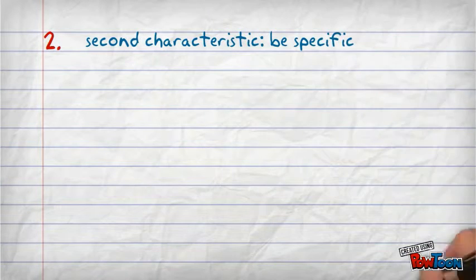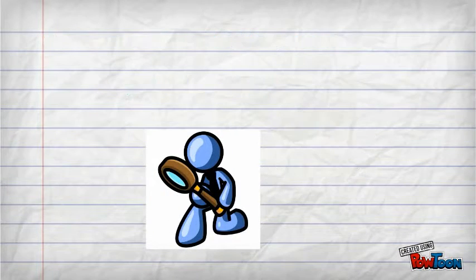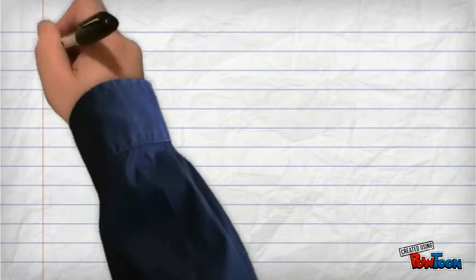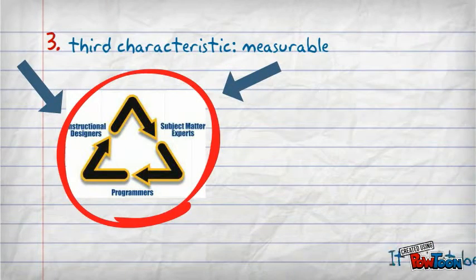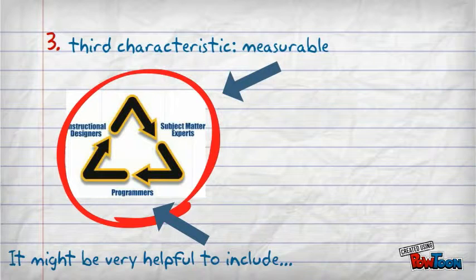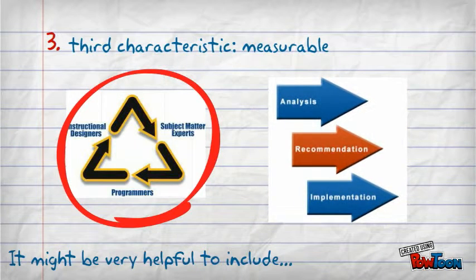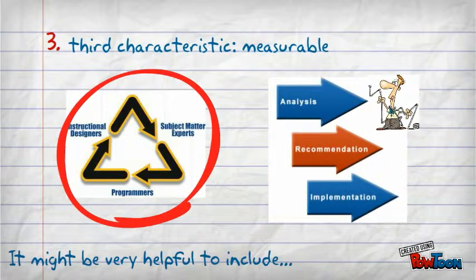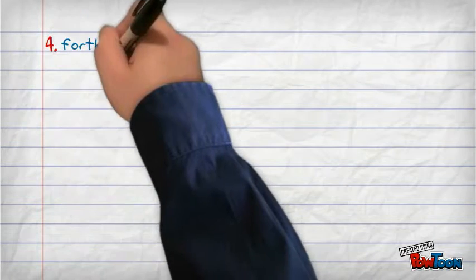The second characteristic is being specific. Include examples to help faculty. The third characteristic is to offer measurable suggestions, both to the faculty and to the instructional designer.